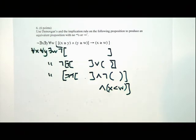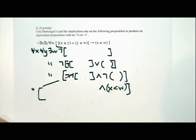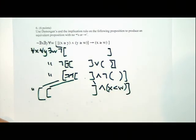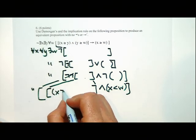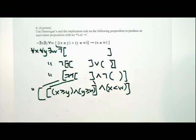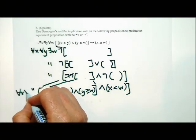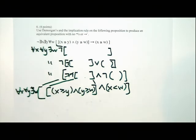Now we're going to distribute this not. The or changes into an and, then we have to do a not in front of those parentheses. These nots cancel out — even less work to do. The opposite of x greater than or equal to w is just x less than w. We're done with that second part. This and is going to be a final answer, and we copy everything out so we have a final line that has everything on it.